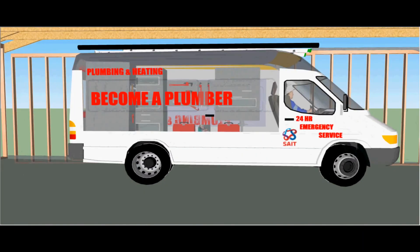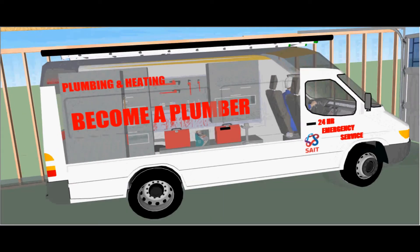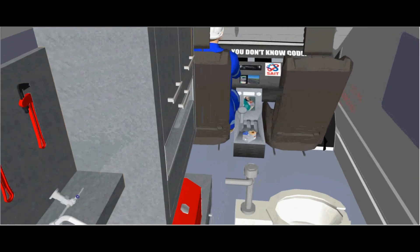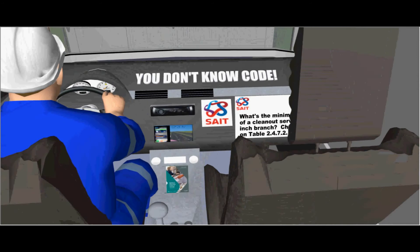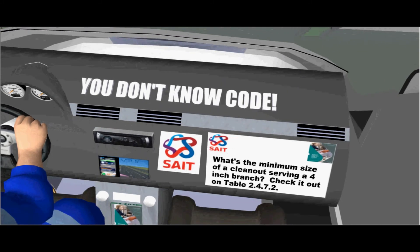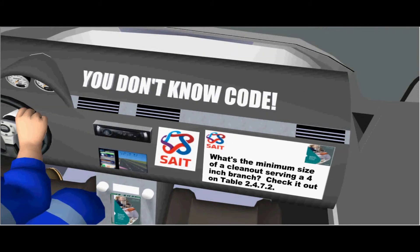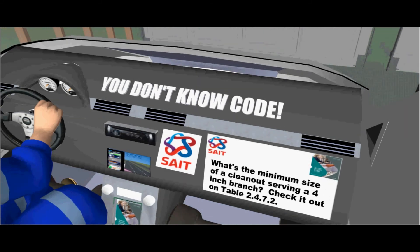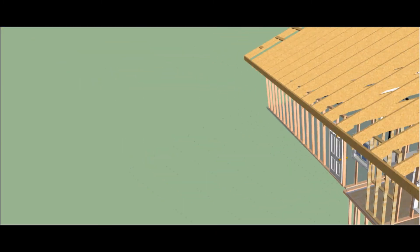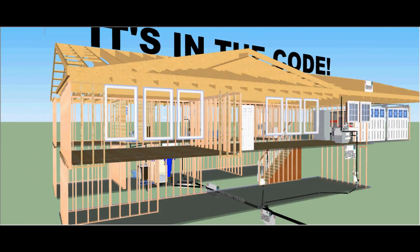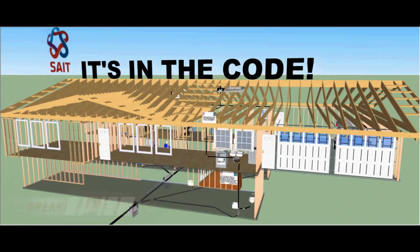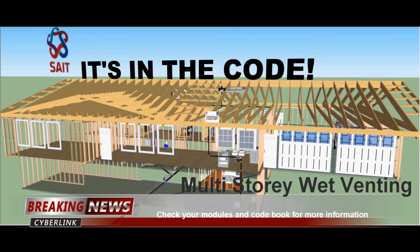Now let's continue on into the garage and check out our plumber's service van. For the final question, what's the minimum size of a clean-out serving a 4 inch branch in the 15 code? Check it out on table 2472. It's an update in the 2015 National Plumbing Code. For more information on code clauses concerning reference, check out your modules in 2nd, 3rd and 4th year.